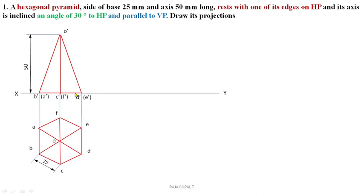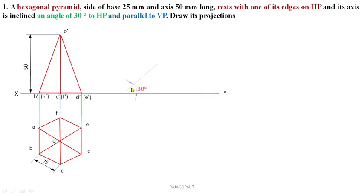This is the simple position of the hexagonal pyramid. Now I have to make the axis inclined at an angle of 30 degrees to HP. That is the axis — O', C', F' edges and axis. So you can take any point on the XY reference line and mark a 30-degree inclination without any specific length. Draw a thin line at 30-degree inclination.